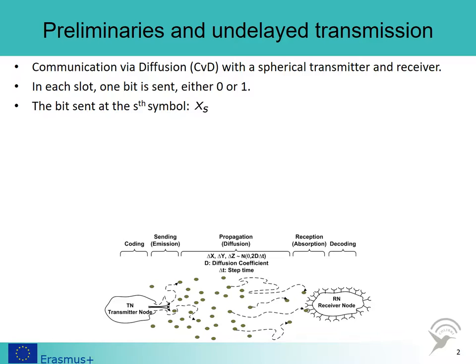We denote the bit sent at symbol S as X sub S. For sending the bit 1, the transmitter node releases a predefined number of messenger molecules, MM for short, into the communication medium. For transmitting the bit 0, no molecules are released. The number of molecules representing a bit is a random variable and is denoted by calligraphic N sub S.